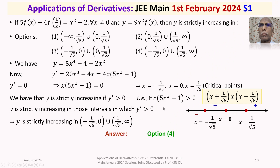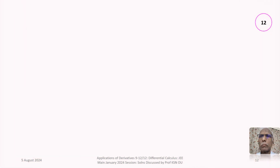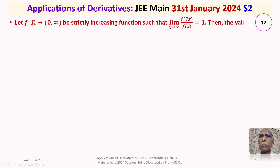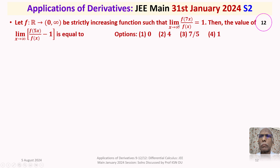It is also a straightforward question. We move on to the next problem, where we are unable to arrive at a rigorous answer — I will tell you what happens. The question is: let f be a strictly increasing function defined from R to (0, ∞), such that lim(x→∞) f(7x)/f(x) = 1. Then the value of lim(x→∞) [f(5x)/f(x) − 1] is equal to — we are given 4 options.